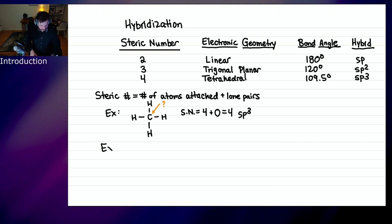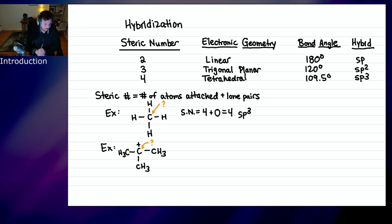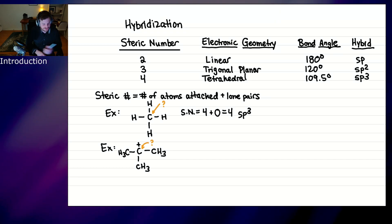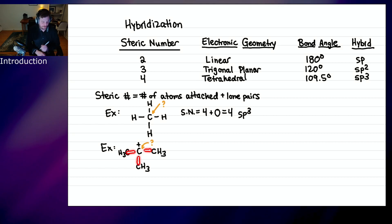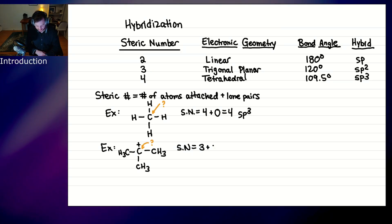Let's try another example — a carbon with a plus charge on it. Charge does not come into the steric number formula at all. We simply ask how many atoms are directly attached to that central carbon. If you count, there are three atoms attached and no lone pairs, so the steric number equals three and the hybridization is sp2.